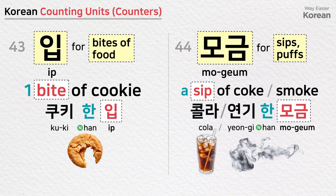입 is a counting unit for bites of food: a bite of cookie — 쿠키 한 입. 모금 is a counting unit for sips of drinks or puffs of smoke: a sip of coke — 콜라 한 모금; a puff of smoke — 연기 한 모금.